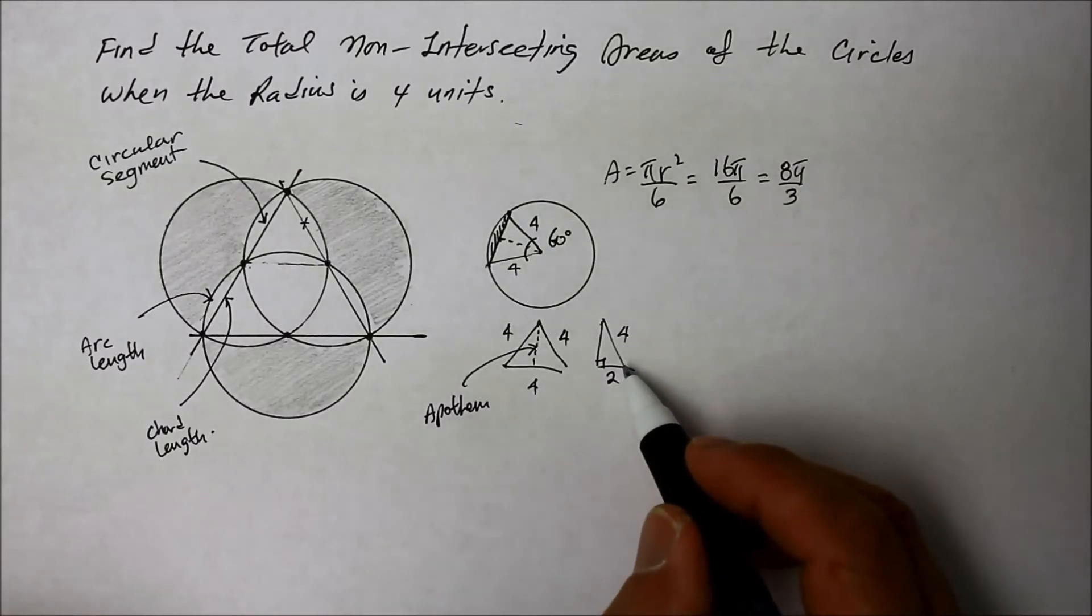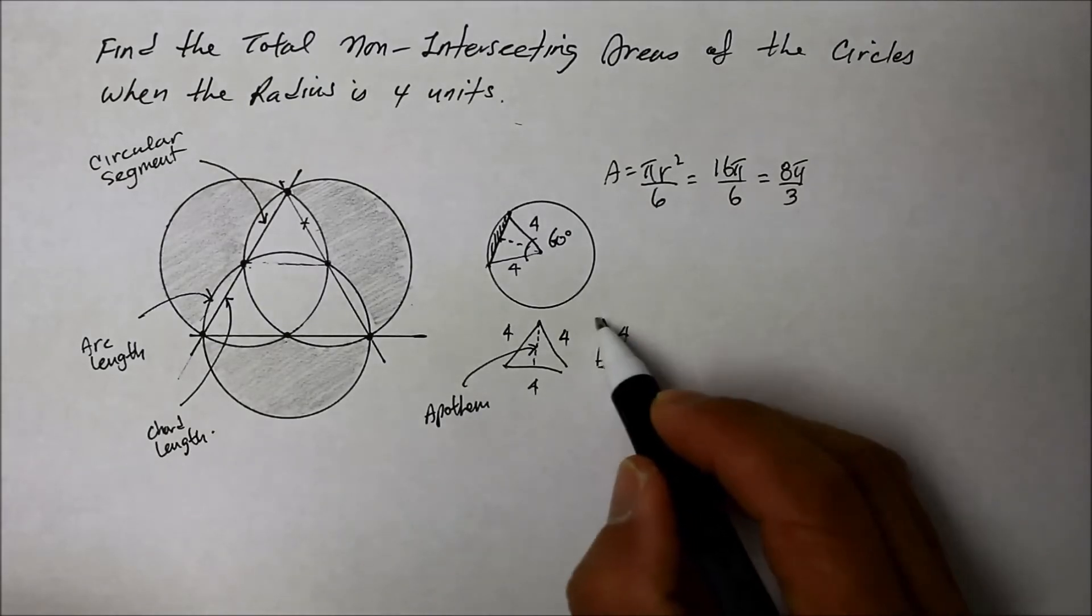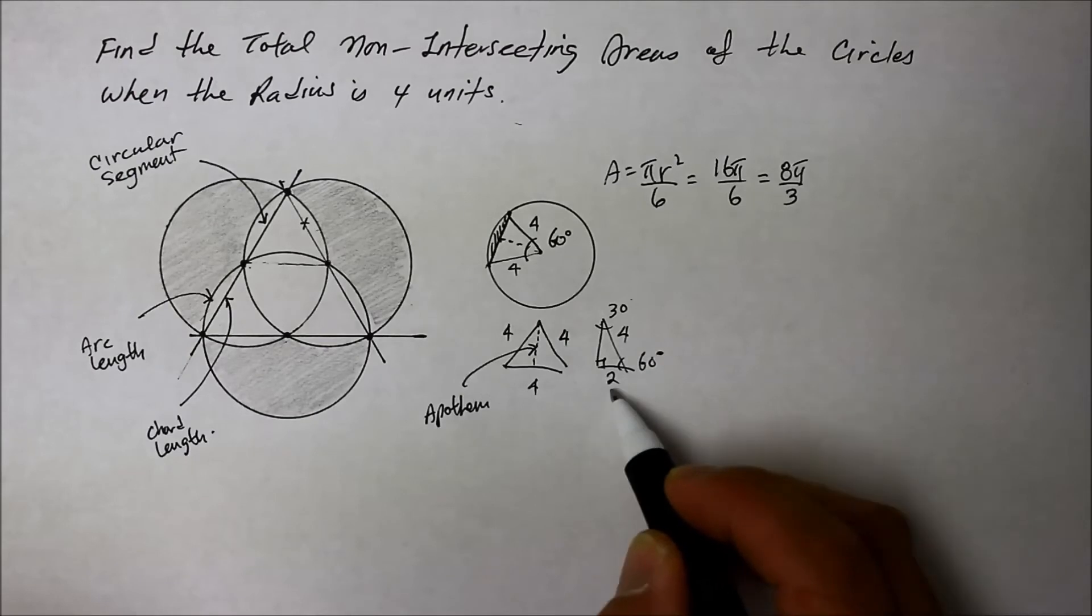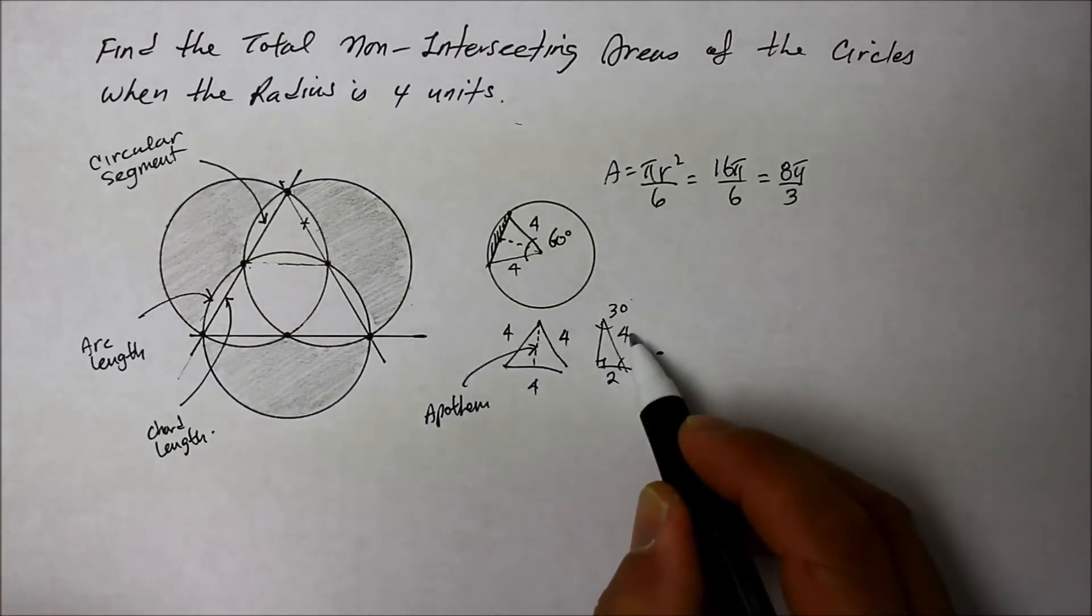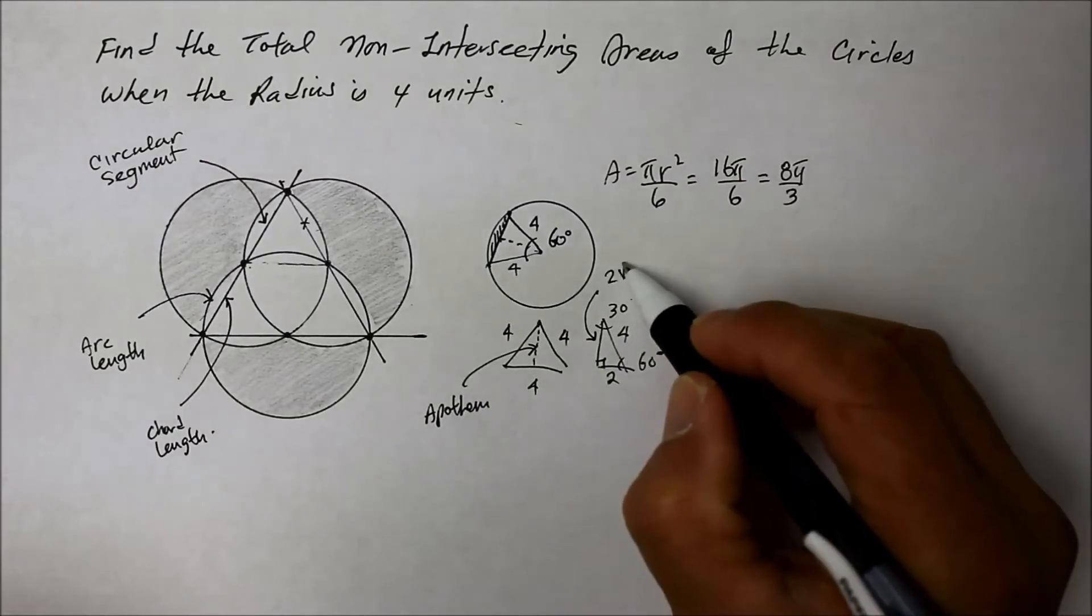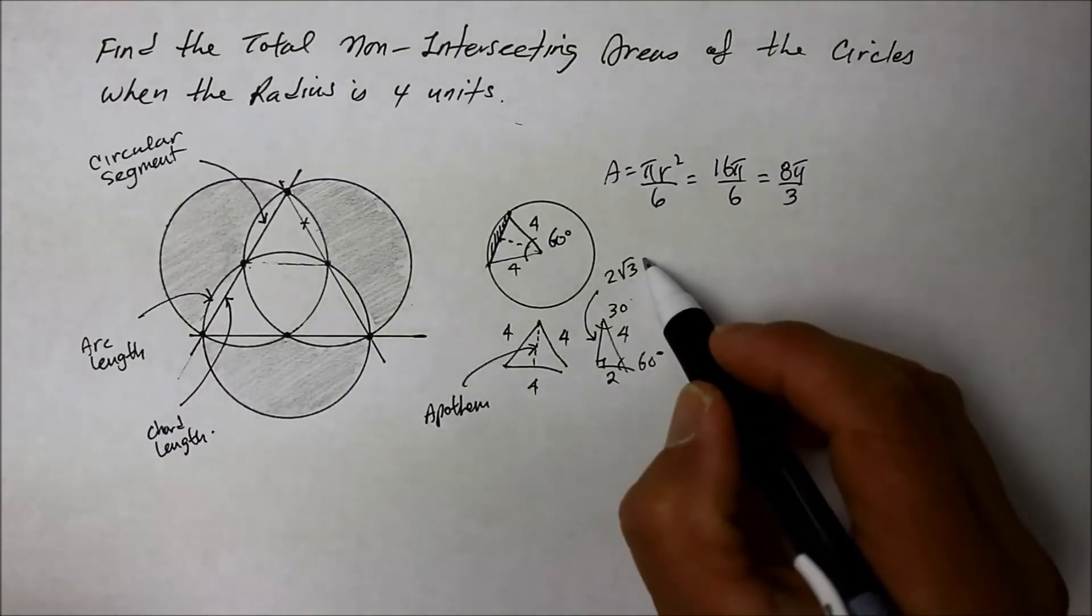And just like the previous instructional video, this falls under the 30-60-90 rule, 30-60-90 ratio. So that's, if that's 2, that's double that. And this is square root of the x.